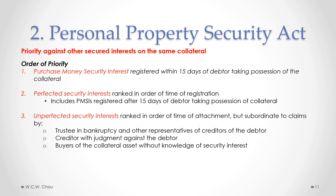A perfected security interest includes PMSIs registered after the 15-day period — if that period is missed, it is treated like any other perfected security interest. The third priority consists of unperfected security interests — those that have not been registered — ranked in order of time of attachment, meaning when the security agreement was entered into. However, unperfected security interests are subordinate to claims by a trustee in bankruptcy and other creditor representatives, a creditor with a judgment against the debtor, and buyers of the collateral asset without knowledge of the security interest.